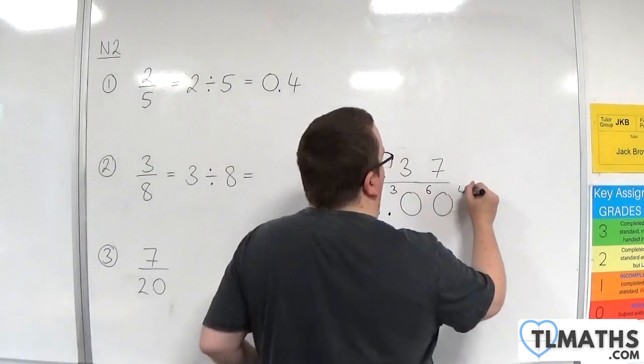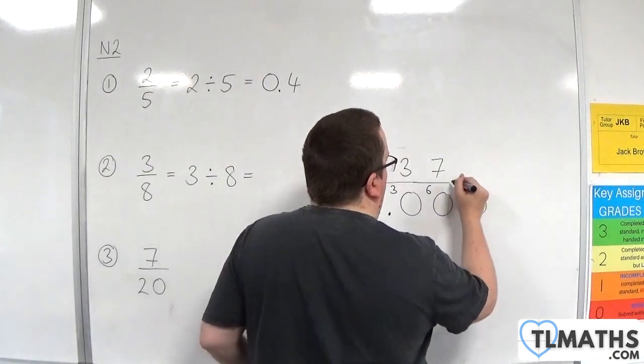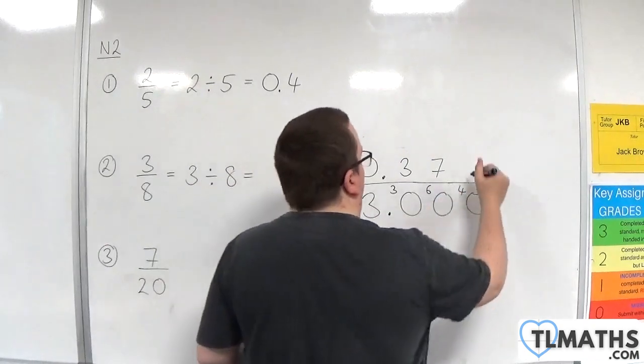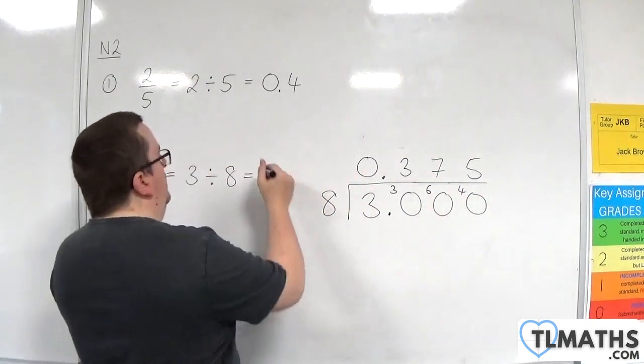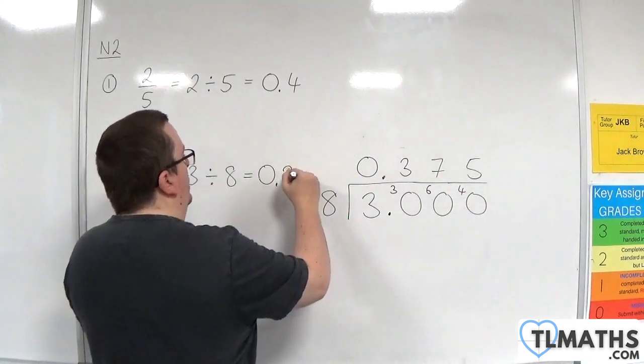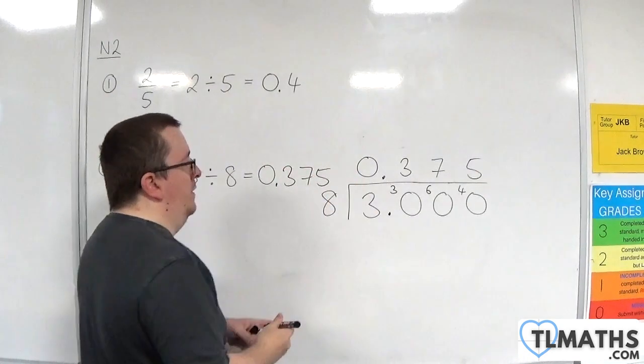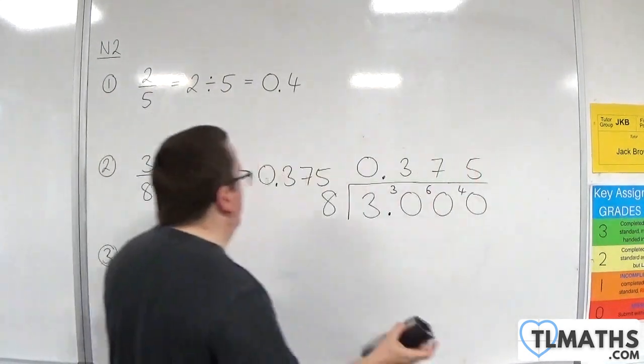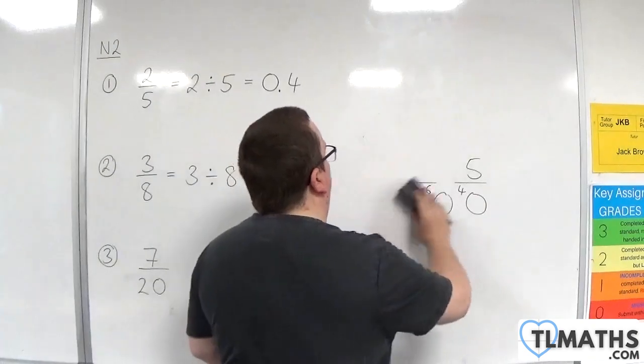Eights into 60 go seven. Eight sevens are 56 with four left over. Bring in a zero. Eights into 40 go five. So we get 0.375. That is three-eighths as a decimal.